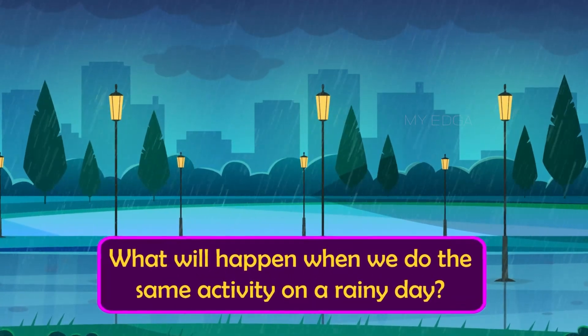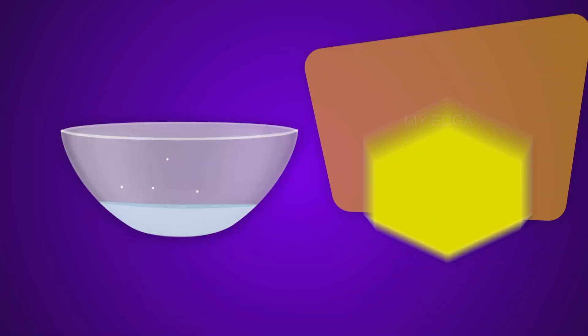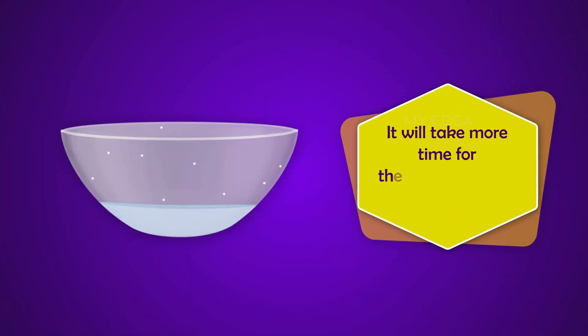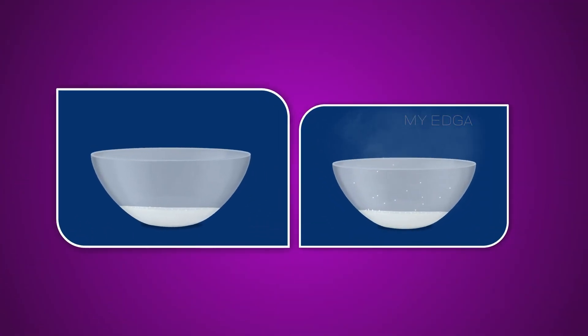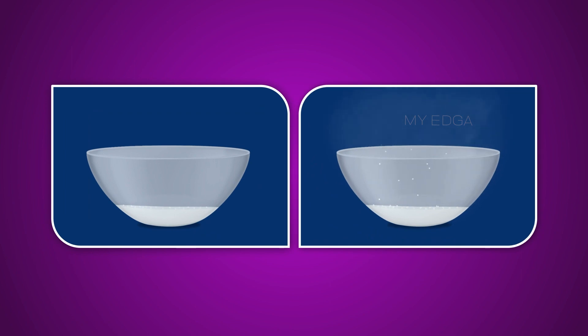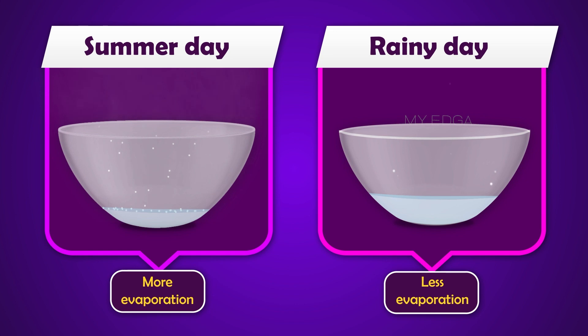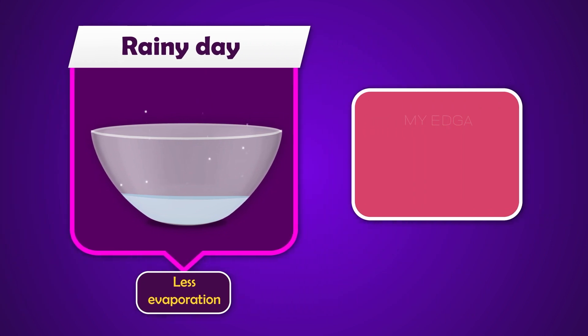Now can you tell me what will happen when we do the same activity on a rainy day? Yes, it will take more time for the evaporation of water. This is because of two factors: temperature and humidity. As the temperature is high, more particles get enough kinetic energy to go into their vapor state, so evaporation happens fast on summer days than on rainy days. Also, the atmosphere is more humid on rainy or winter days as compared to the summer.